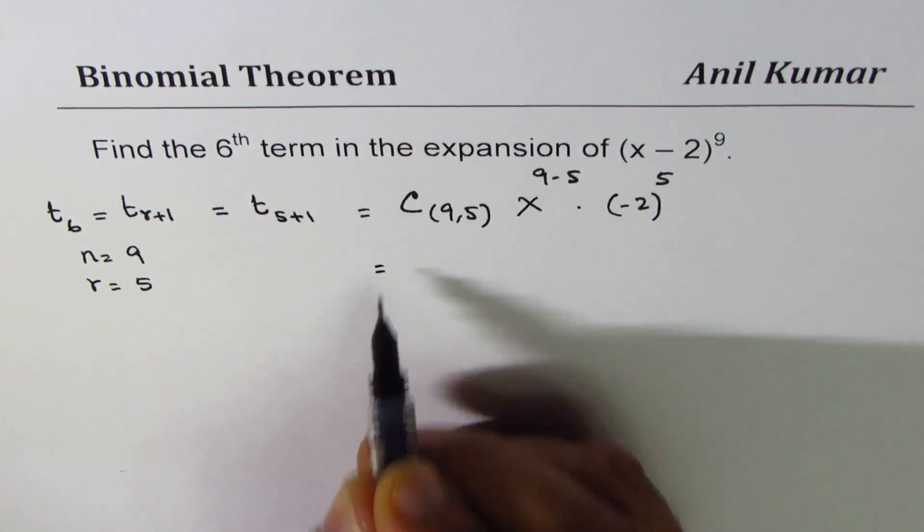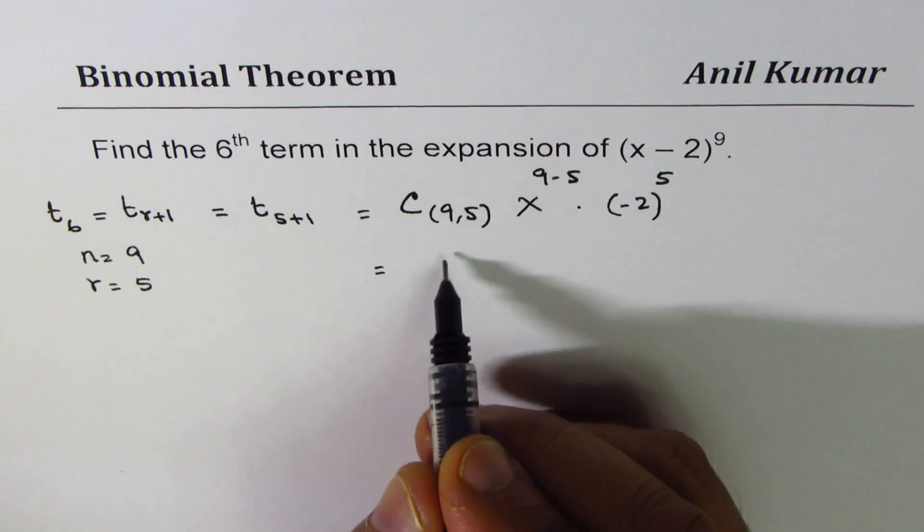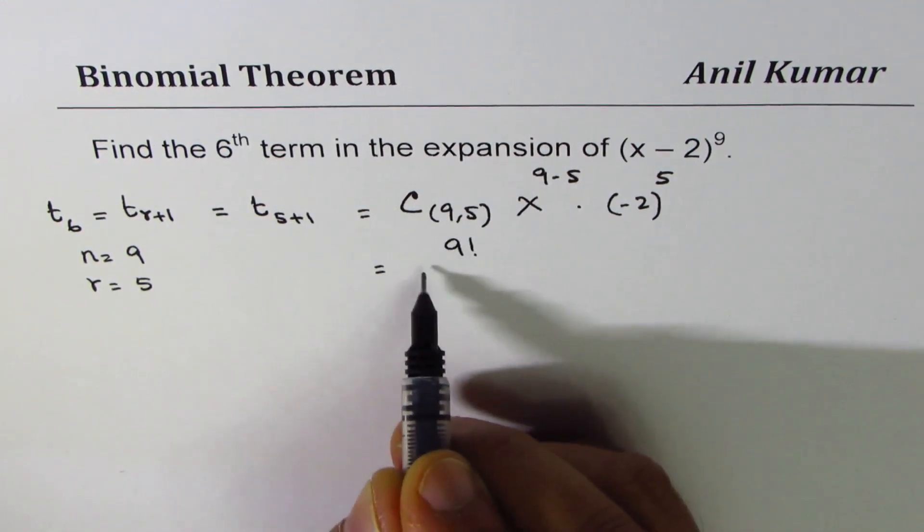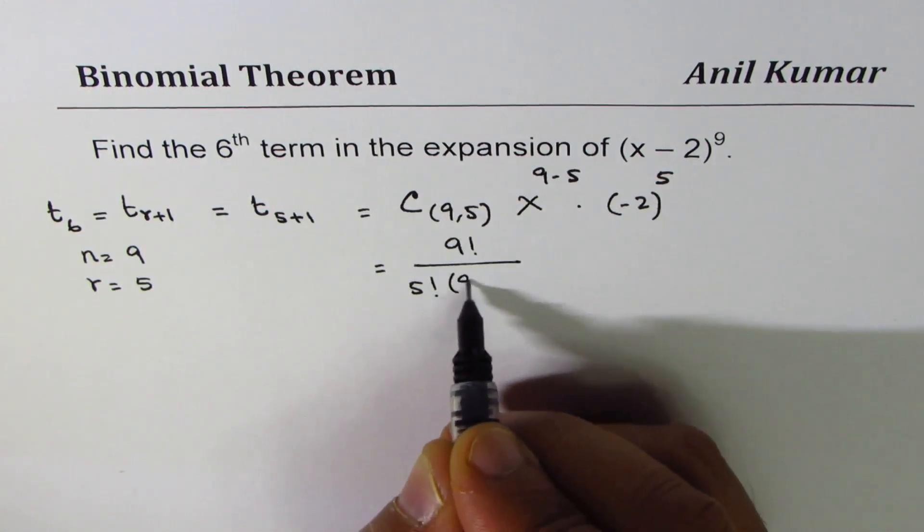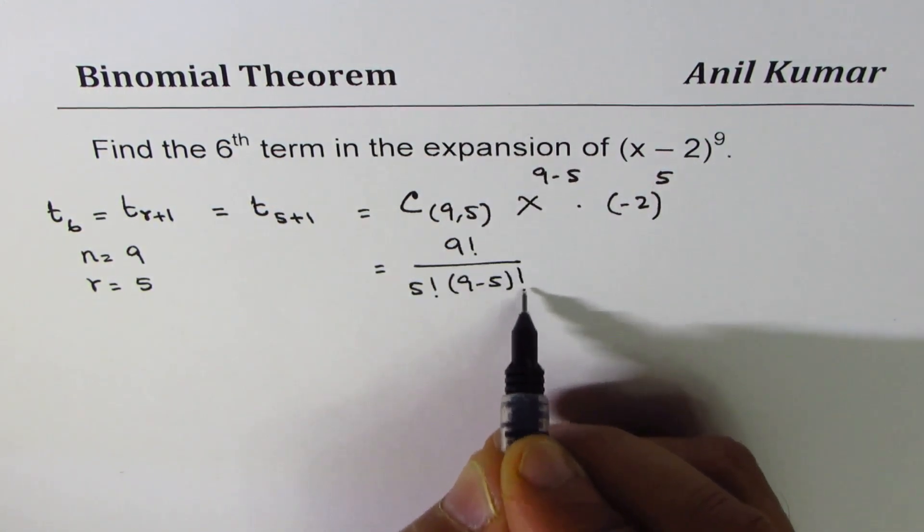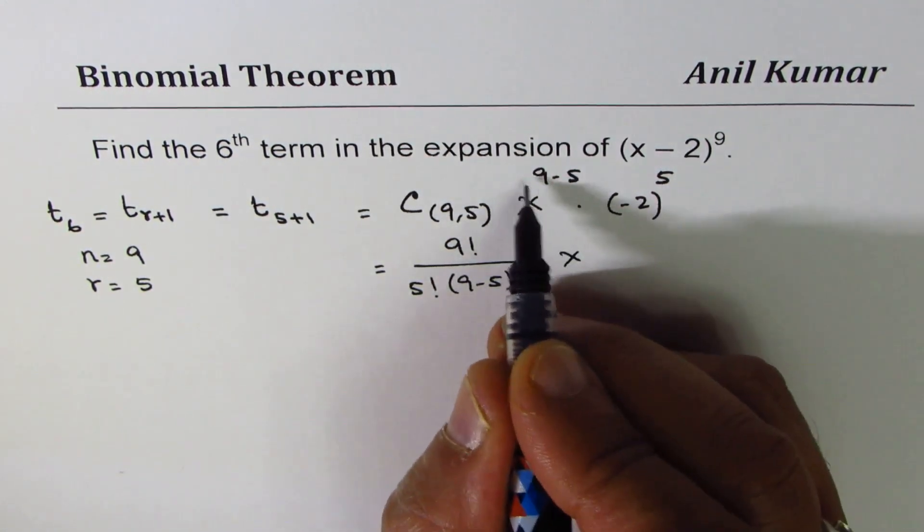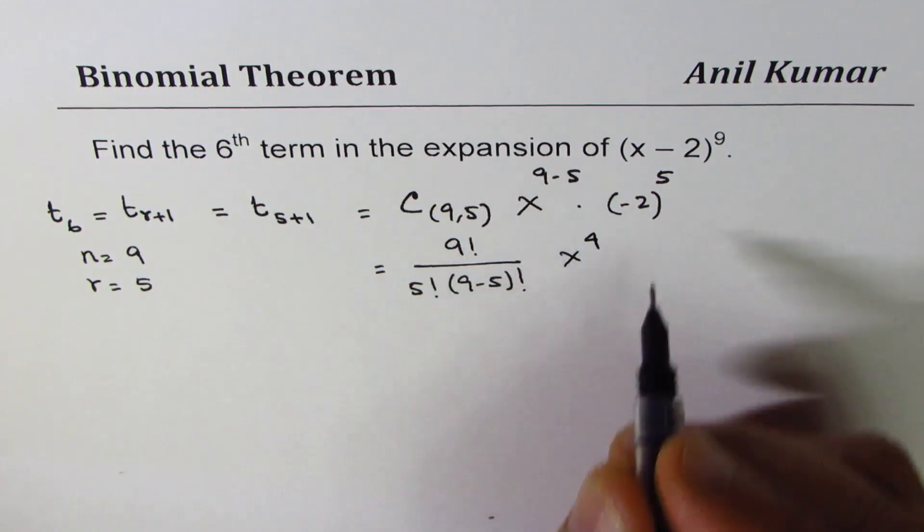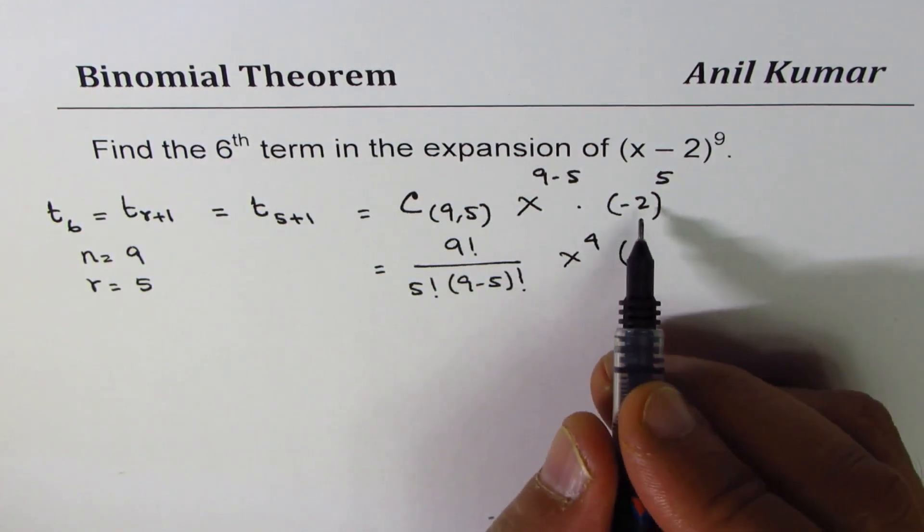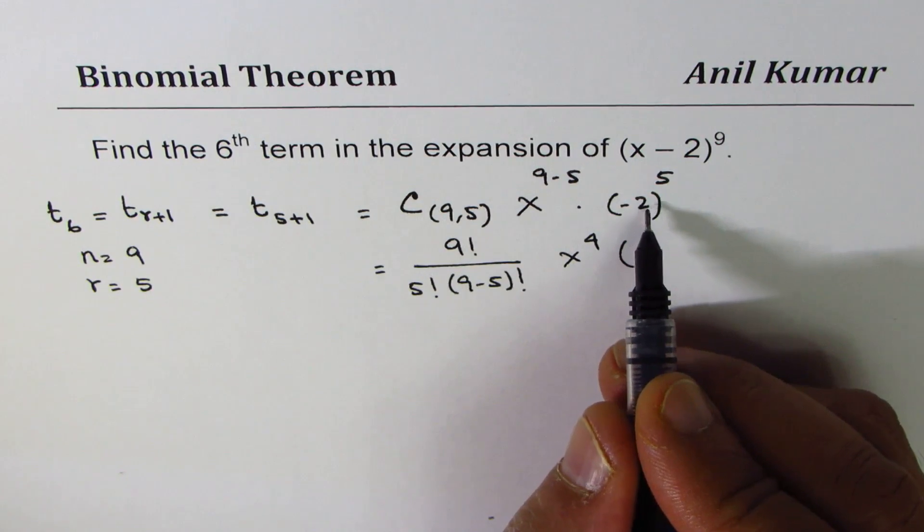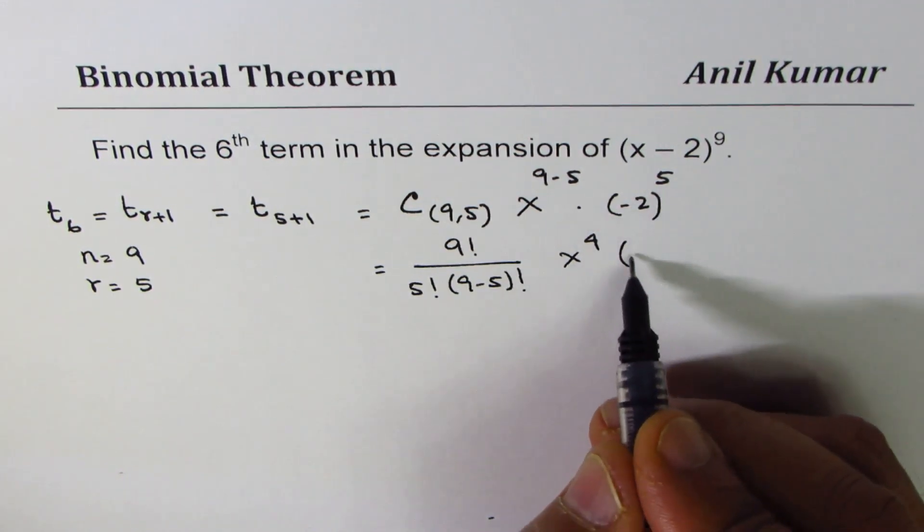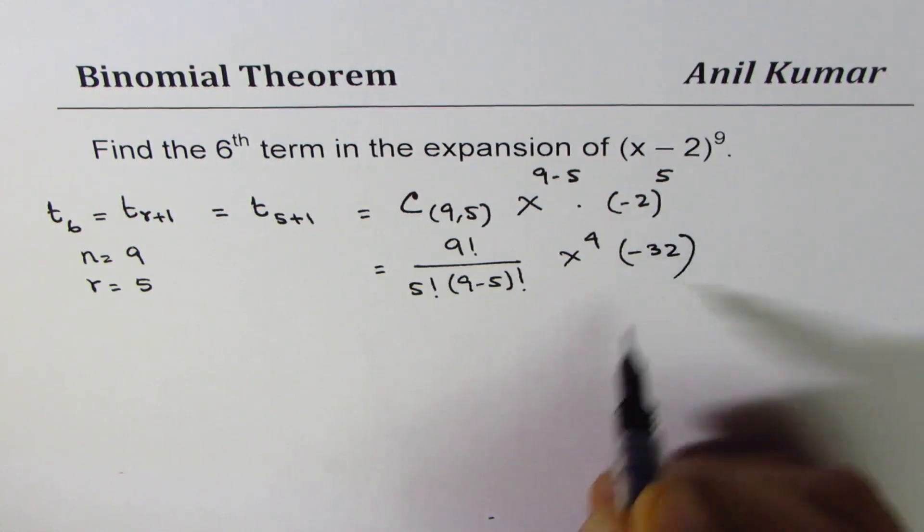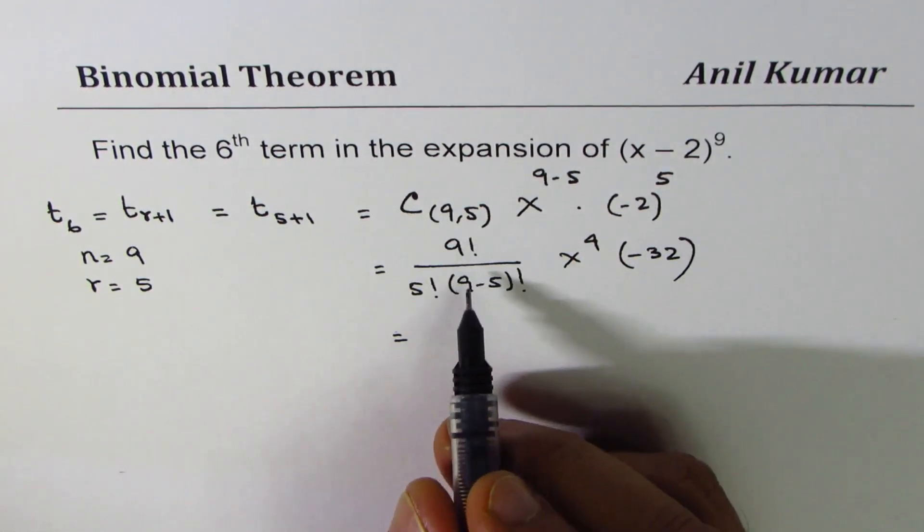So that gives us 9 factorial divided by 5 factorial times 9 minus 5 factorial x to the power of 9 minus 5 which is 4 and minus 2 to the power of 5. So 2 to the power of 5 is 32 so minus 32. Let's simplify this.